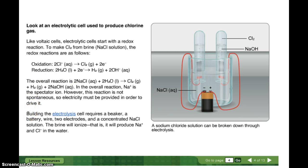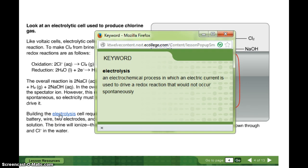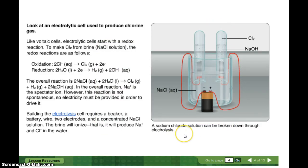Building the electrolysis cell requires a beaker, a battery, wire, two electrodes, and a concentrated sodium chloride solution. The brine will ionize — that is, it will produce sodium ions and chloride ions in water. Electrolysis is an electrochemical process in which an electric current is used to drive or force a redox reaction that will not occur spontaneously. A sodium chloride solution can be broken down through electrolysis — using electricity to break it down.